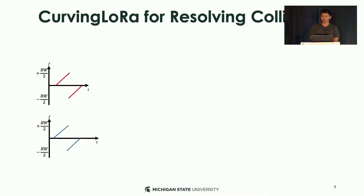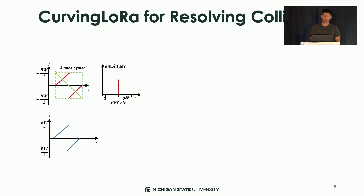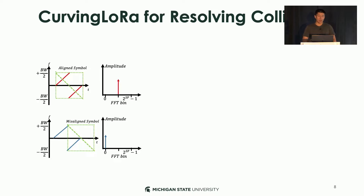We start thinking about the root cause of the collision issues. With the chirp symbol shown here, when we align the operation window with the chirp symbol, it forms an energy peak on the spectrum as expected. However, for those interfering chirp symbols, which are usually misaligned with the operation window, it can still form an energy peak. We can understand this phenomenon at a high level: for the overlapping part, whether the symbol is aligned or misaligned, the operation window is always up-down symmetrical with the chirp symbol.